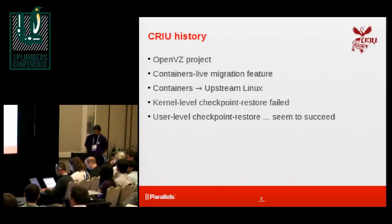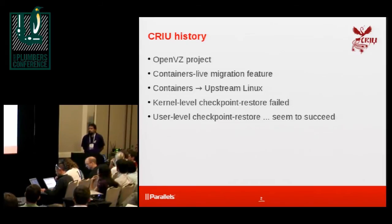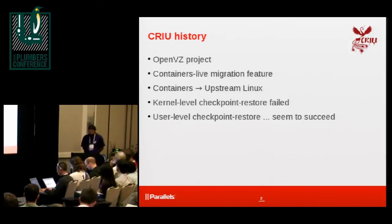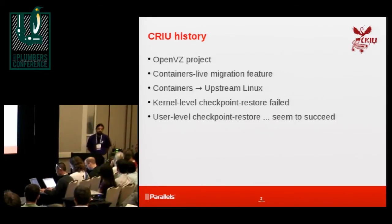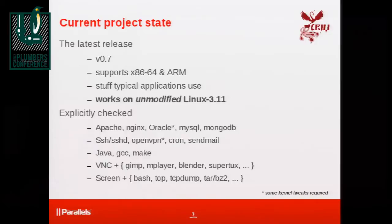The first attempt, which was done not only by us, was on the kernel side. We tried to come up with a set of kernel patches to provide a Checkpoint Restore API for user space to dump the full state of a process, pull it out of the kernel, save it on disk, and then restore the process from that information. This approach was not accepted by the kernel community due to big complexity and intrusiveness into the kernel. So we decided to do it on the user space side, and so far we seem to be quite successful with that.